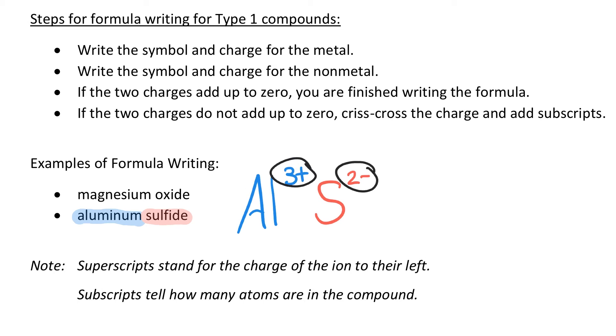I take the charge on the metal and I take the charge on the non-metal, and what I'm going to do is crisscross that so that the number comes down, and that is going to be the subscript that says how many atoms are in my individual elements in the compound.